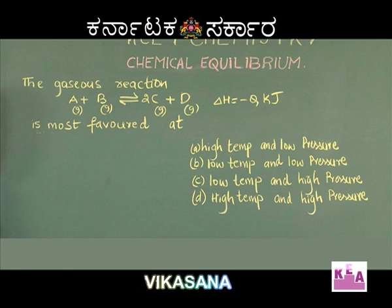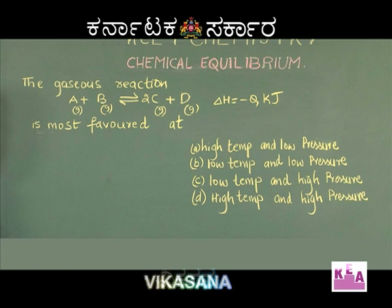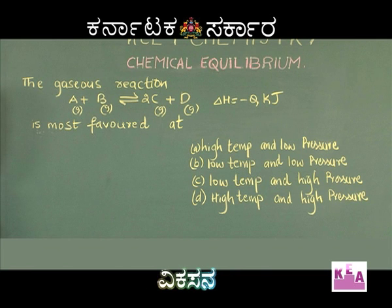delta H is equal to minus Q kilojoules of energy. The reaction is most favored at: option A, high temperature and low pressure; option B, low temperature and low pressure; option C, low temperature and high pressure; option D, high temperature and high pressure.